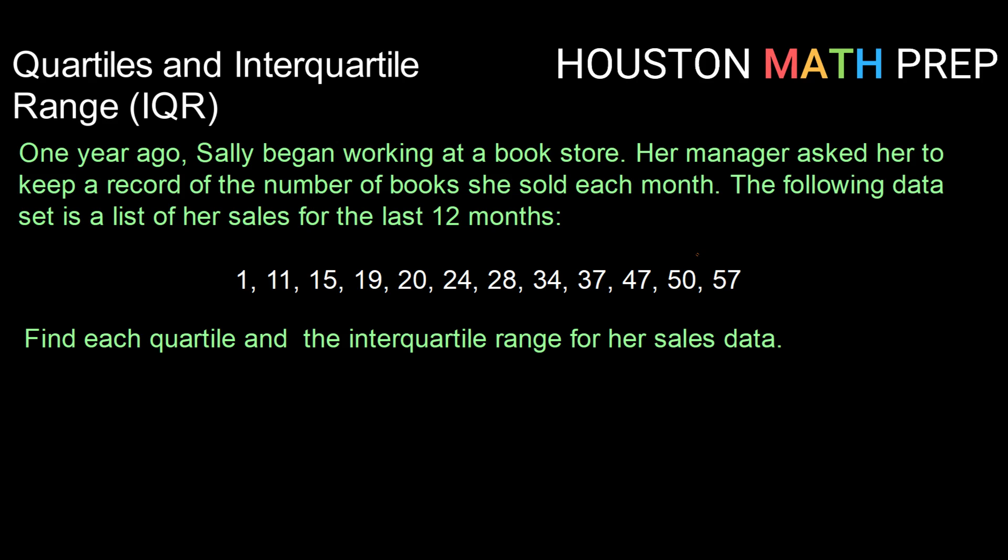All right, so we want to find each quartile and the interquartile range for this data. To start, we're actually going to start by finding q2, which we know is our median. So median, we know, is in the middle. If I have 12 values here, then I know that half of that is 6. So 1, 2, 3, 4, 5, 6.